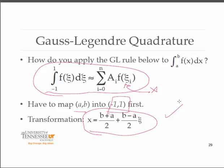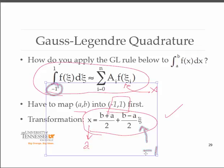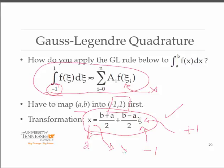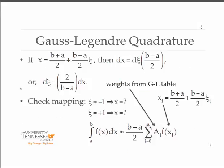How do you know this mapping works? If you plug in minus 1 for c, you can verify that x maps to A, and if you plug in plus 1, x maps to B. So as we move from A to B, we move from minus 1 to 1 in c, which is exactly what we need for the quadrature rule.